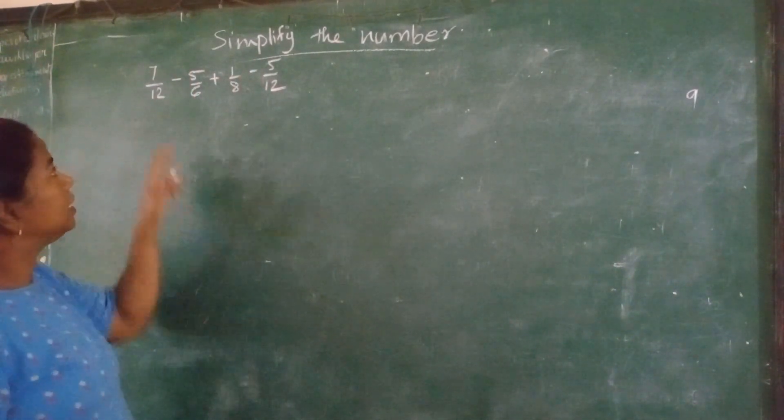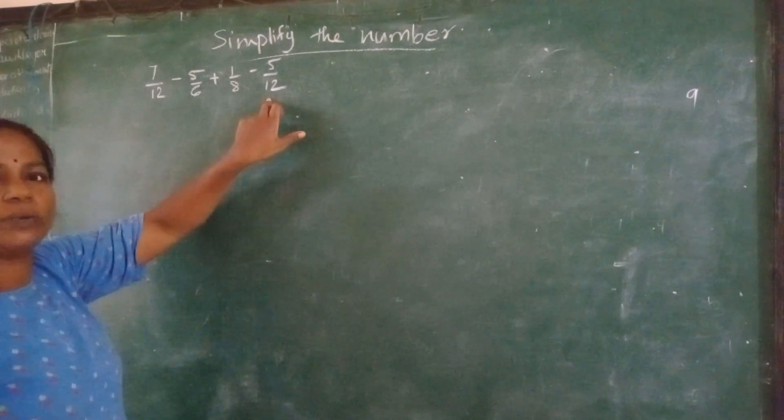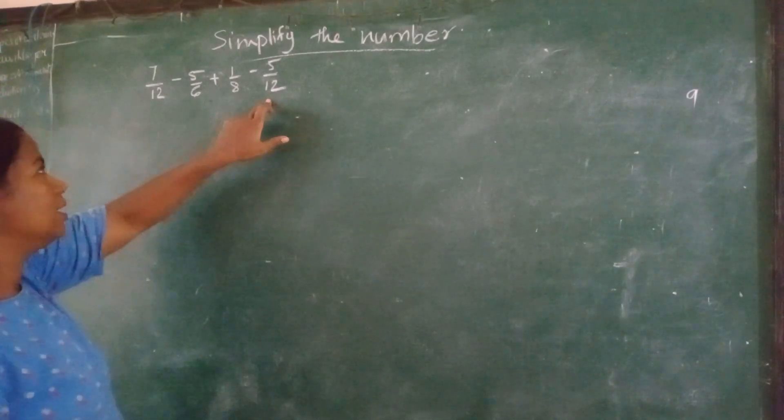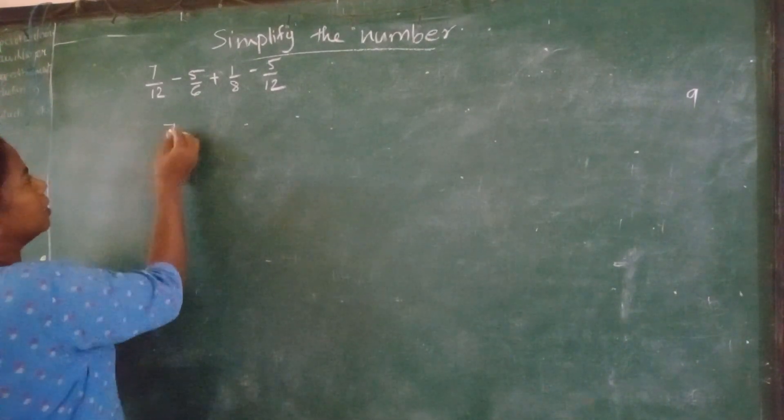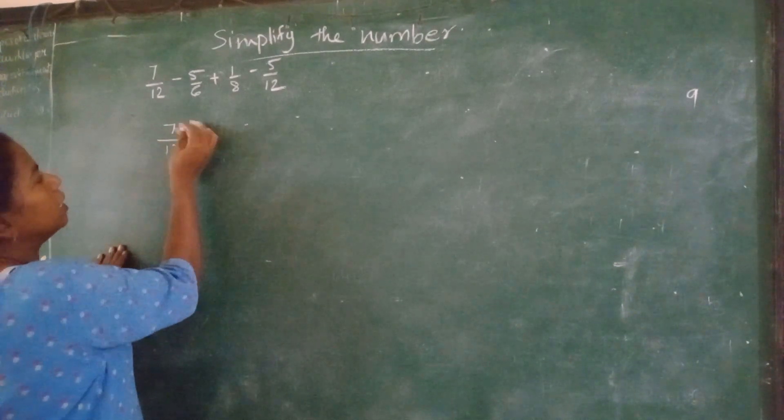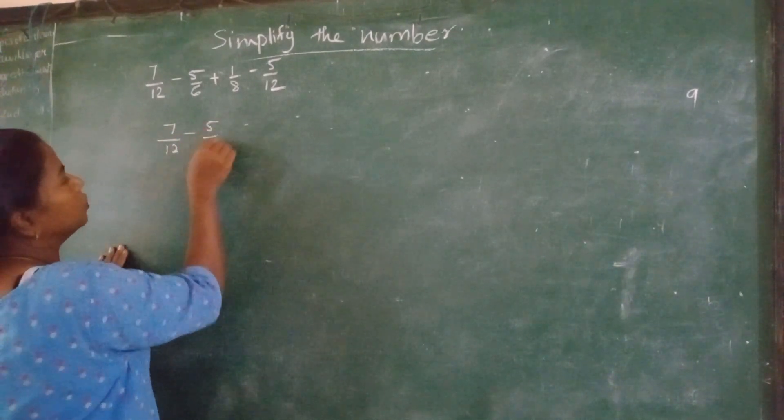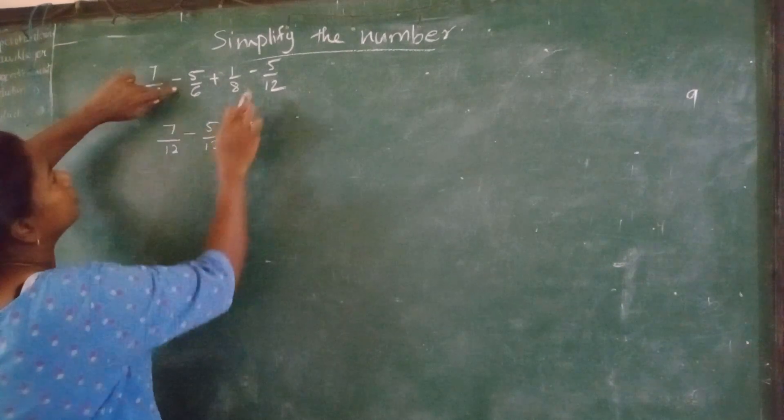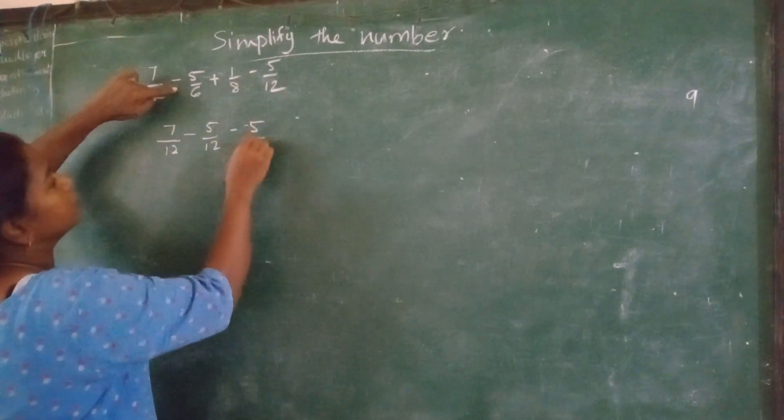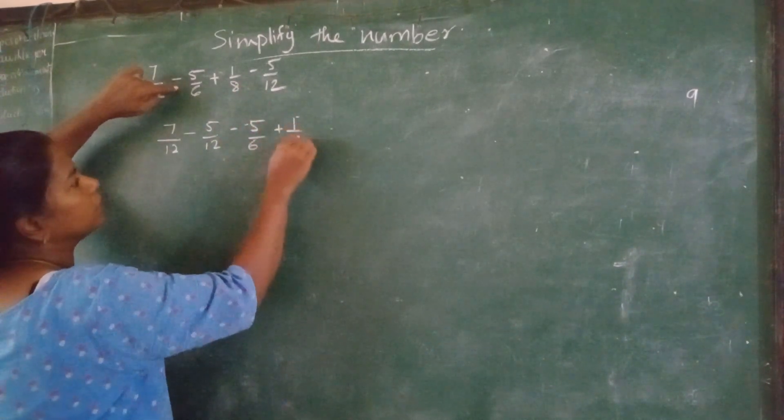There is nothing common in all. One thing you can do is 12, 12 you can write together. So I will arrange in this manner: 7 upon 12 minus 5 upon 12 minus 5 upon 6 plus 1 upon 8.